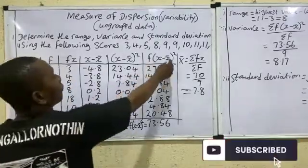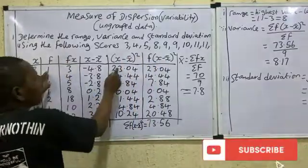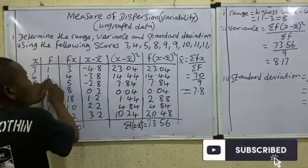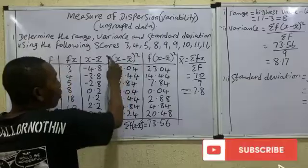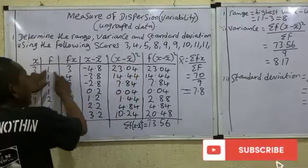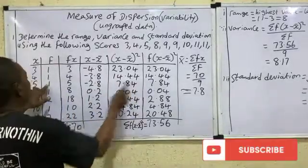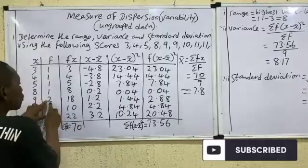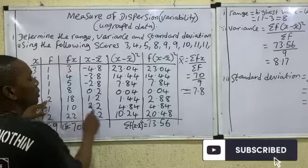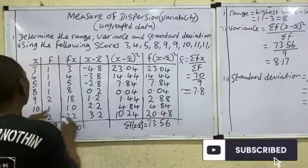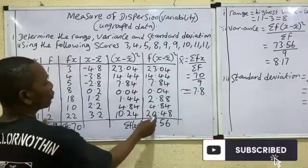Next, compute f times (x minus x-bar) squared for each row. Multiply each squared deviation by its corresponding frequency f. For rows with f=1, the value stays the same. For the row where f=2 (x=9), you get 2 times 1.44 = 2.88. For x=11 where f=2, you get 2 times 10.24 = 20.48.